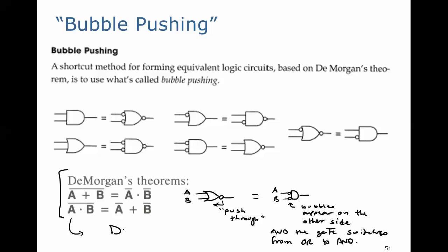This is going to be an AND with a bubble on the output, because we're taking the inverse of the AND, and we're saying that's equal to the sum of the inverses.